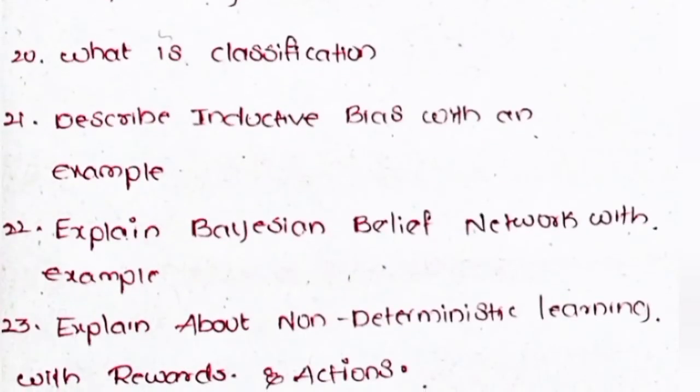Twentieth: what is classification. Twenty-first: describe inductive bias with an example. Twenty-second: explain Bayesian belief network with example. Twenty-third: explain about non-deterministic learning with rewards and action.